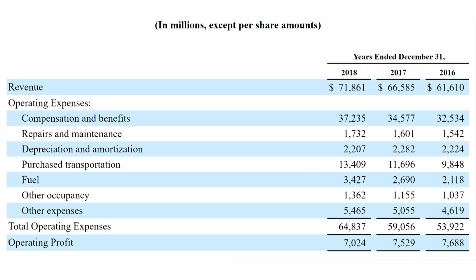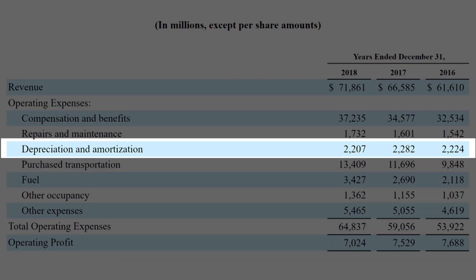The reason EBITDA is such a widely accepted profitability measure is because it strips out non-core or incidental expense line items like taxes and interest expense, in addition to non-cash expense line items like depreciation and amortization.